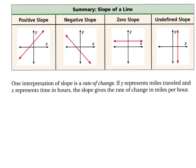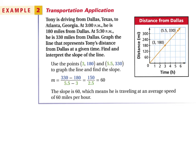So in example two, you don't need to write this down. I just want you to listen. Here it is. Tony is driving from Dallas, Texas to Atlanta, Georgia. At 3 p.m., he is 180 miles from Dallas. Dallas would be 0-0. At 5:30 p.m., he is 330 miles from Dallas. Graph the line that represents Tony's distance from Dallas at a given time. Find and interpret the slope. This is important. And while it seems easy, a lot of students do get this wrong.